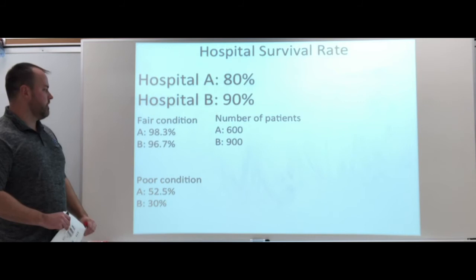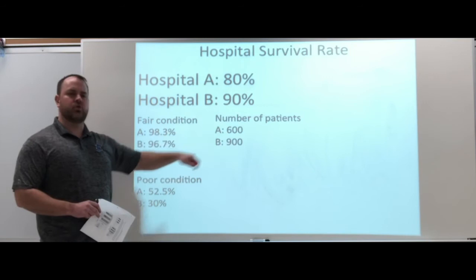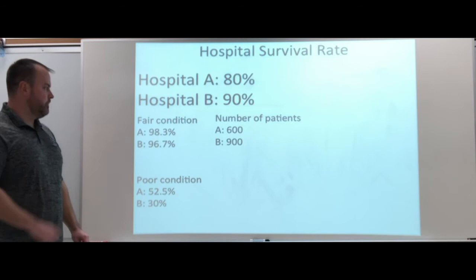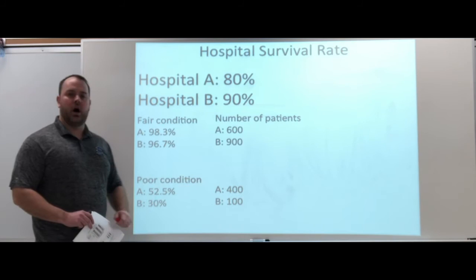So here's the number of patients. Here for Hospital A, we have 600 compared to 900. So we're not exactly sure where that volume is yet, but just know that B has about 300 more. So almost 50% higher than Hospital A.